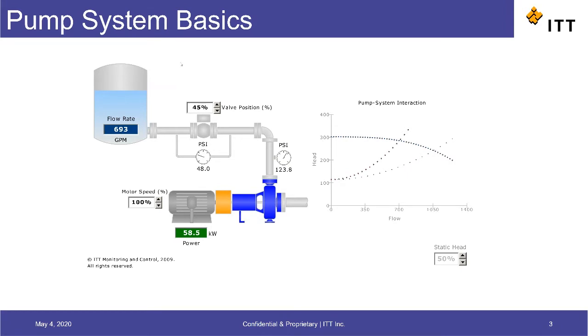So again, we're going to try to achieve that 700 gallons per minute. We're going to fully open up the discharge valve, and then reduce the motor speed.